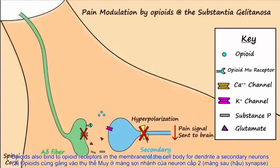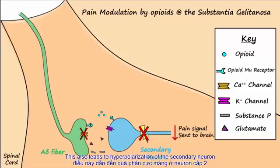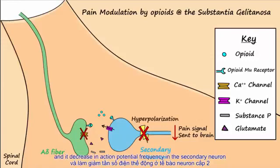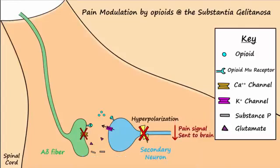Opioids also bind to opioid mu-receptors in the membrane of the cell body, or dendrites, of secondary neurons, and cause opening of potassium channels. This also leads to hyperpolarization of the secondary neuron and a decrease in action potential frequency in the secondary neuron, causing less pain signals to be sent to the brain.